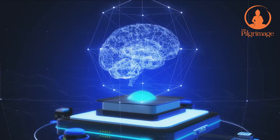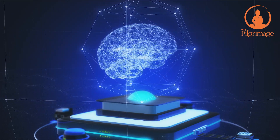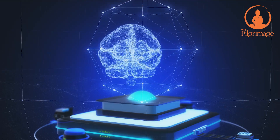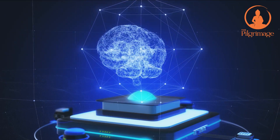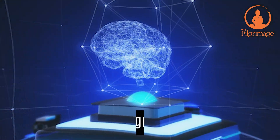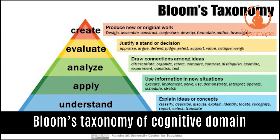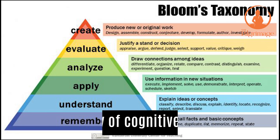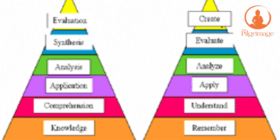This taxonomy was recently revised by Anderson and Crathwall. Let's discuss Bloom's Taxonomy of Cognitive Domain. Bloom proposed that information processing can be classified in six levels, each more complex than the previous.